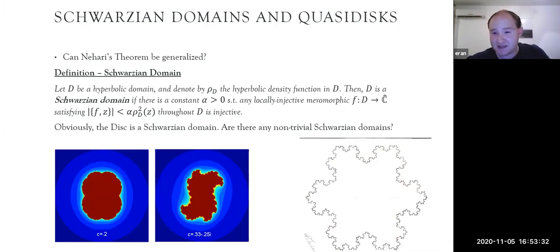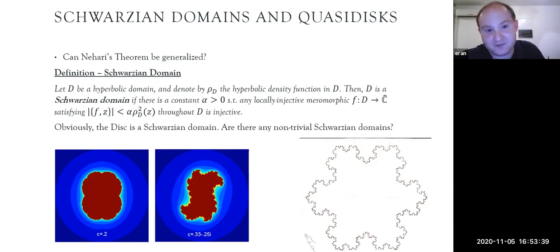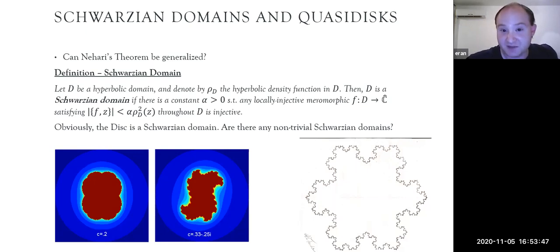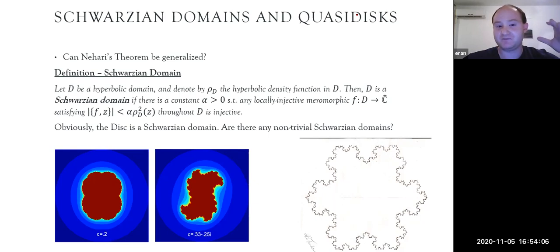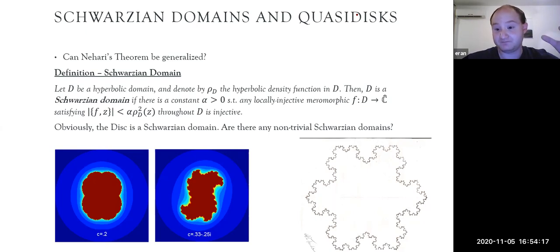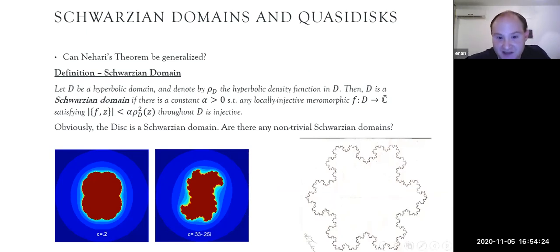Nehari's theorem basically tells us that if we have some upper bound on the growth or decay of a given Schwarzian derivative, we can measure how injective it is. That theorem, while it might seem like nothing more than curiosity, became quite applicable throughout complex analysis, due to two mathematicians — Lars Ahlfors and Lipman Bers — who during the early fifties and sixties were developing the theory of Teichmüller spaces. Both of them soon realized that some version of Nehari's theorem could help them embed the Teichmüller space of several surfaces into a complex manifold which could be more easily described.